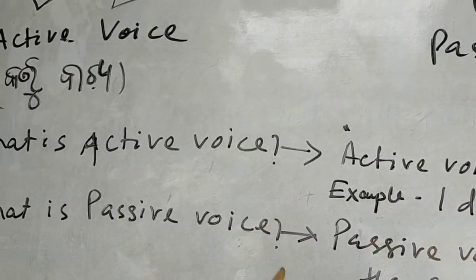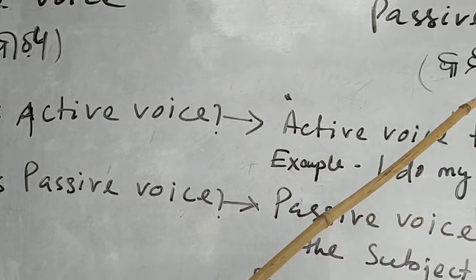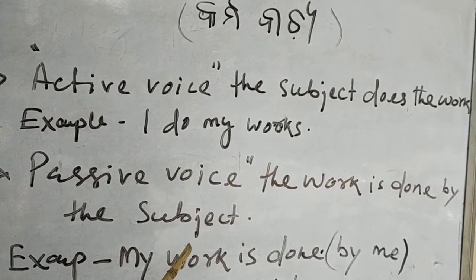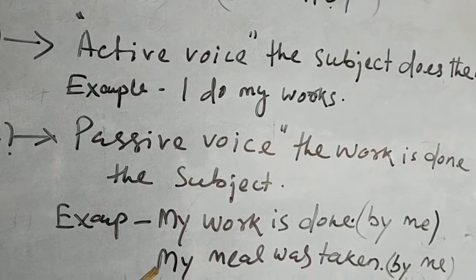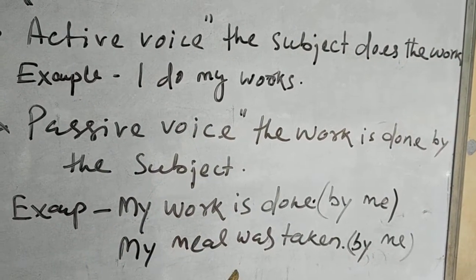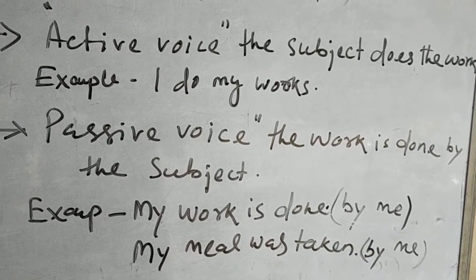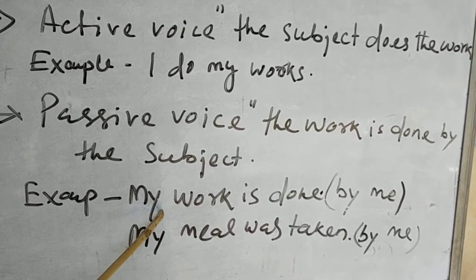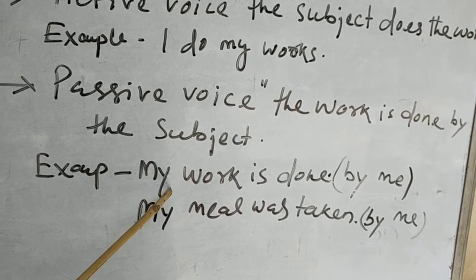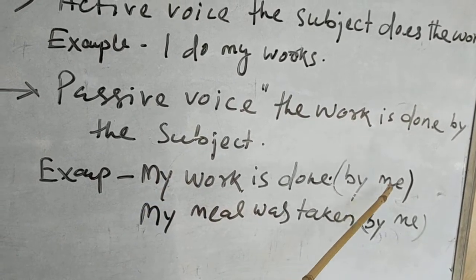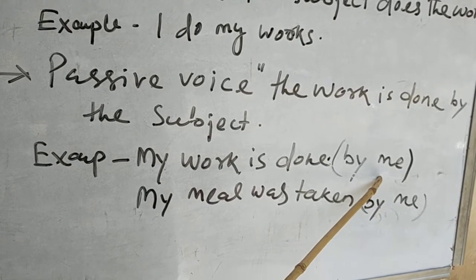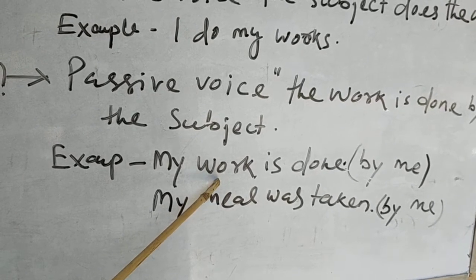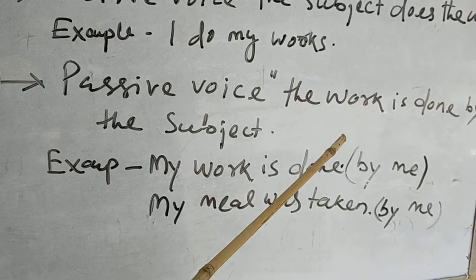What is passive voice? In passive voice, the work is done by the subject. For example, 'My work is done by me.' This means 'my' refers to myself — I have done the work. So 'my work is done by me' means the subject has done its own work. Similarly, 'my meal was taken by me' means I have taken the meal.